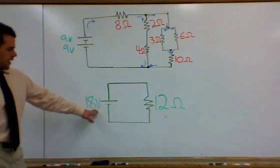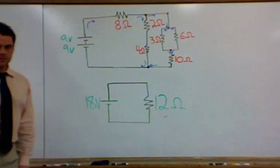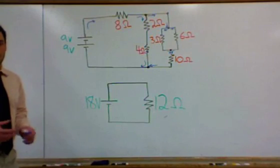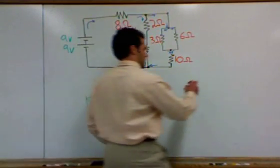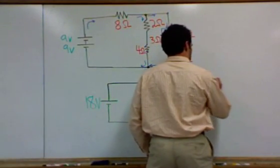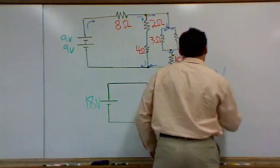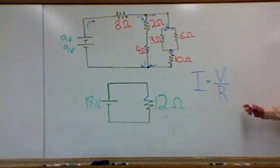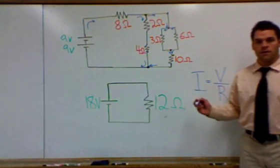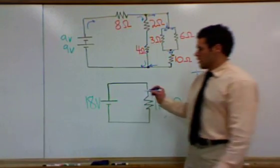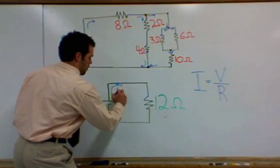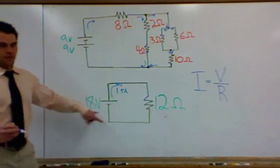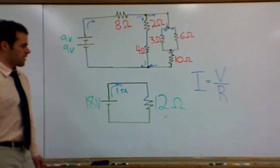Now, we have this, 18 volts, 12 ohms. We can find the current coming from the battery using Ohm's law. Current is equal to voltage over resistance. So the current here, coming from the battery or the power source, would be, if we do it out, 1.5 amps. 18 volts divided by 12 ohms gives us 1.5 amps.